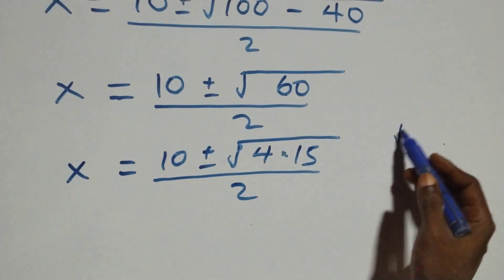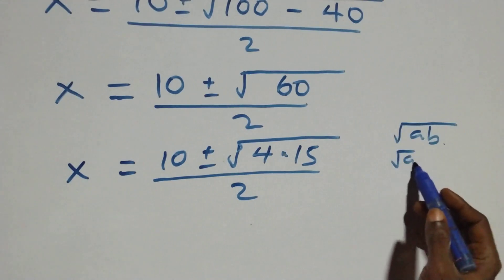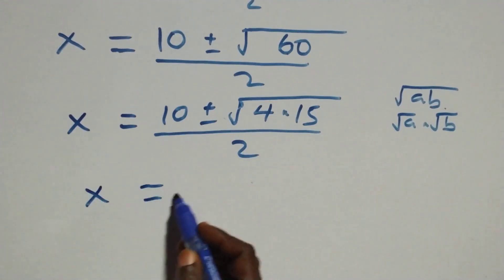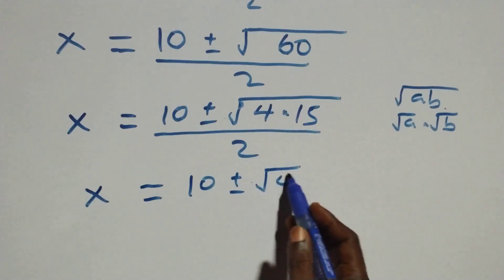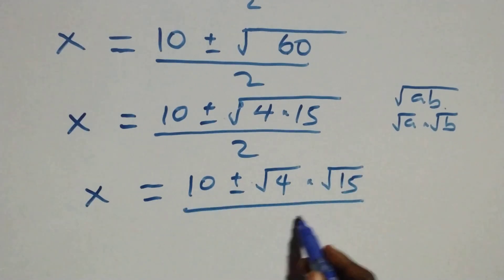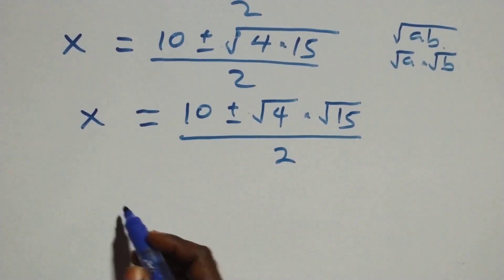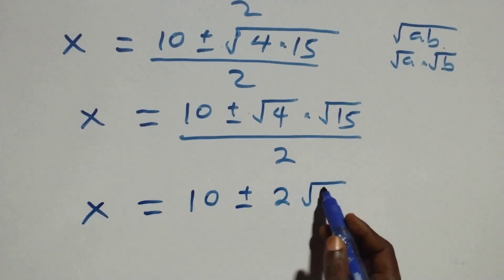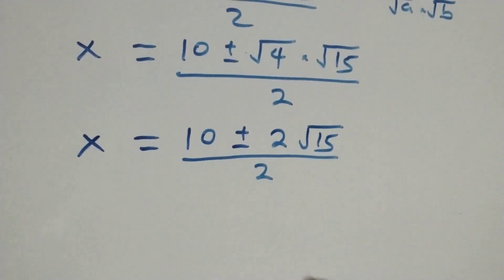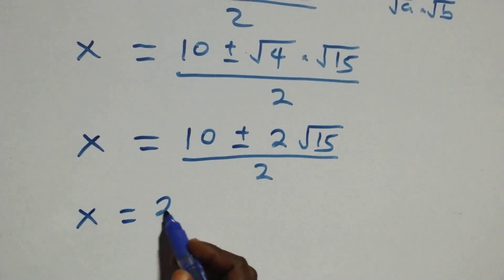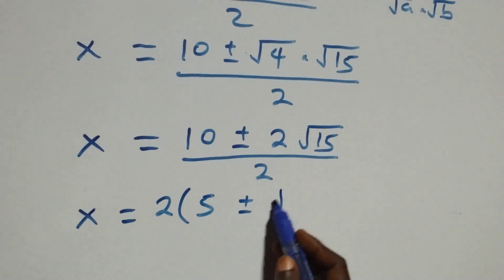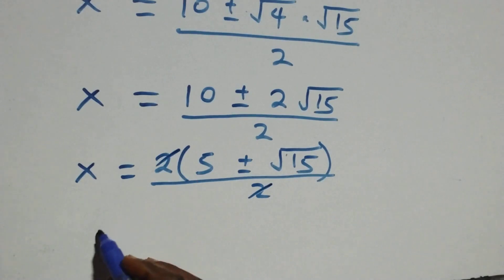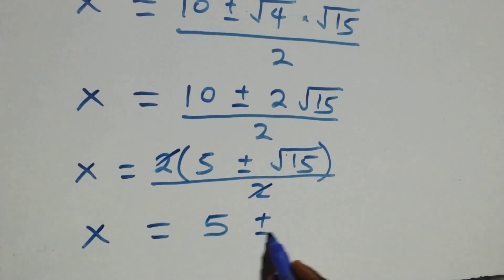When we have root of a times b, this can be written as root a times root b. So here we have x equals to 10 plus or minus root 4 times root 15, over 2. Root 4 is 2, so we have x equals to 10 plus or minus 2 root 15, over 2. Here 2 is common, and we factor: x equals to 2 times bracket (5 plus or minus root 15) over 2. The 2s cancel each other and we have x equals to 5 plus or minus root 15.